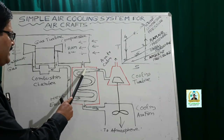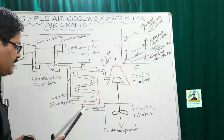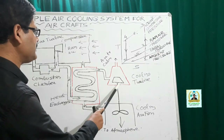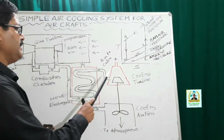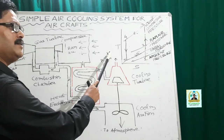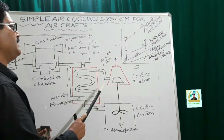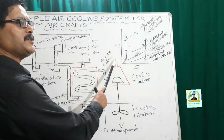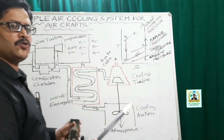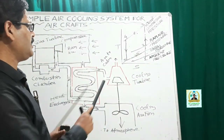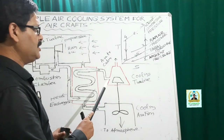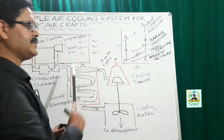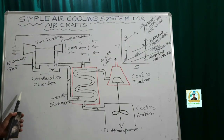The ram air is delivered to the atmosphere. The air passing through the cooling turbine enters the cabin or cockpit, where it receives heat from the space to be cooled — that is, the cabin or cockpit. Here the heat absorption, or refrigerating effect, is actually achieved.